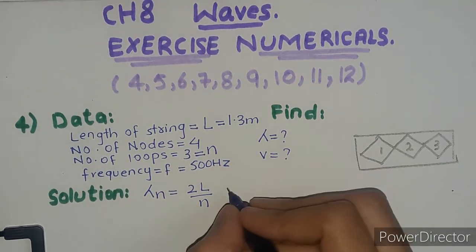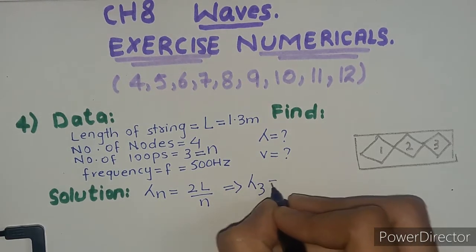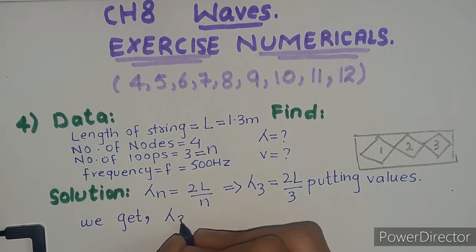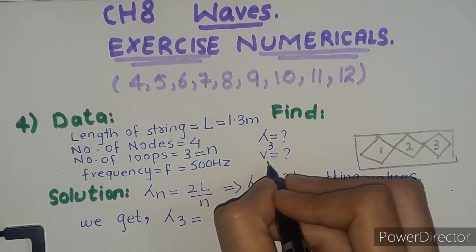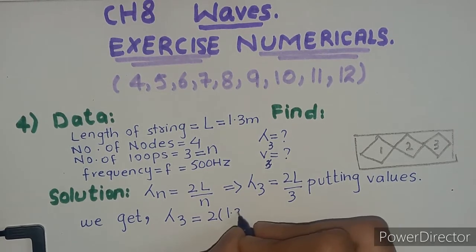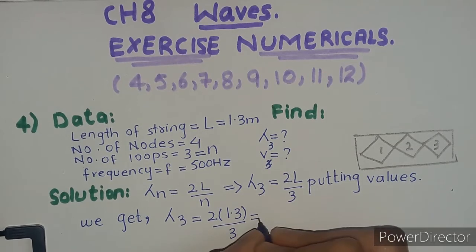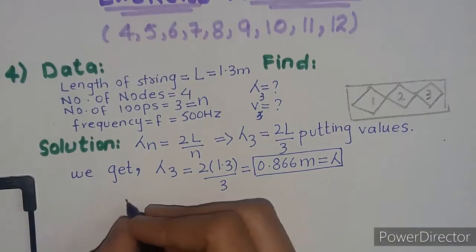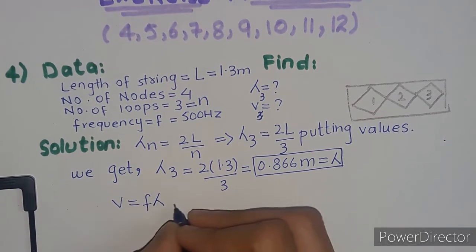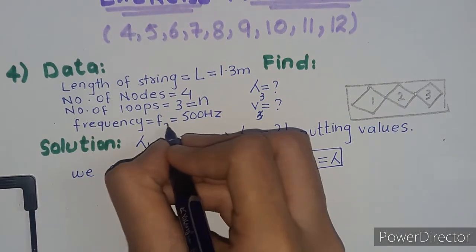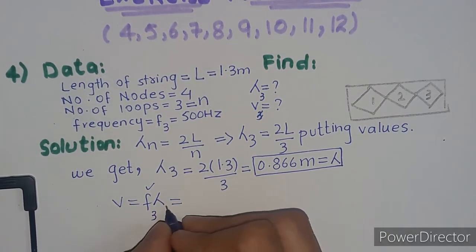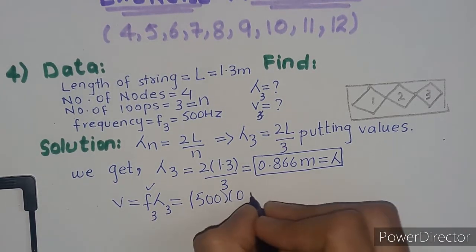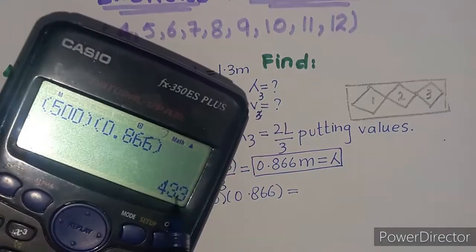Since n equals three, lambda_3 equals 2L divided by 3. Putting in the values: lambda_3 equals 2 times 1.3 divided by 3, giving 0.867 meters. Using the speed formula v equals f times lambda, with frequency f_3 equal to 500 Hz and lambda equal to 0.866, we get v equal to 500 times 0.866, which gives 433 meters per second.